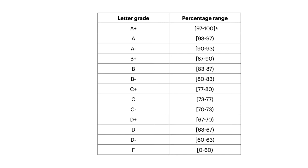No rounding will take place. This means that if your grade is, for example, 92.9%, your final grade would be an A-, because 92.9% is greater than or equal to 90% but is less than 93%.